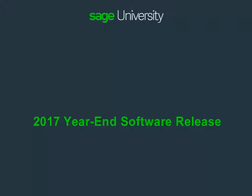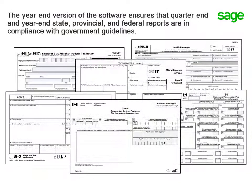Every year, Sage 300 Construction and Real Estate prepares and releases a year-end version of the software. This software contains important changes specific to government reporting and updates the integration with Atrix so that when you generate quarter-end and year-end forms and statements, they comply with government requirements.